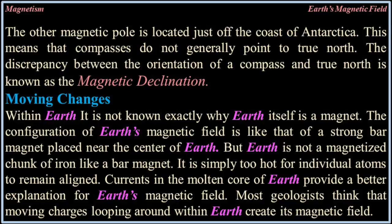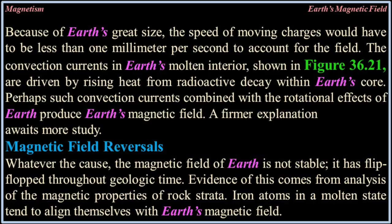The configuration of Earth's magnetic field is like that of a strong bar magnet placed near the center of the Earth. But Earth is not a magnetized chunk of iron like a bar magnet — it is simply too hot for individual atoms to remain aligned. Currents in the molten core of Earth provide a better explanation for Earth's magnetic field. Most geologists think that moving particles looping around within Earth create its magnetic field. Because of Earth's great size, the speed of moving charges would have to be less than one millimeter per second to account for the field.